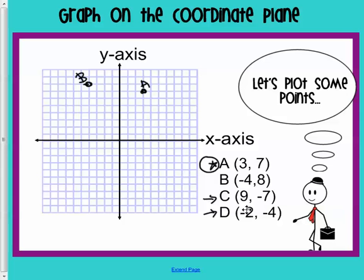So for C, we are going to take, and we are going to move it 9 spaces, and then down 7. So, here is our C. For D, we're going back 2 places, and down 4. So, here is our D.